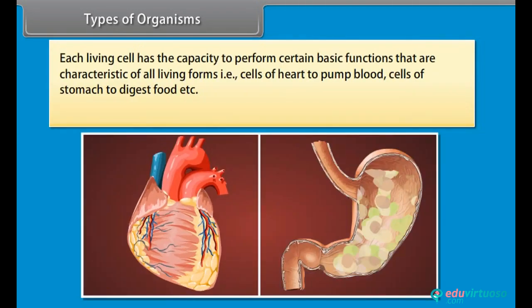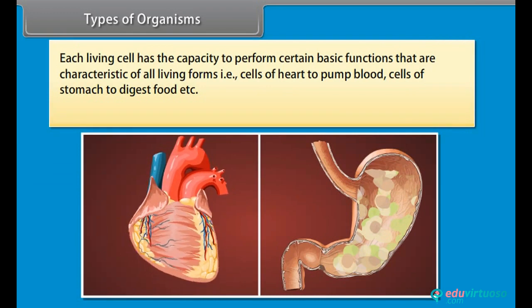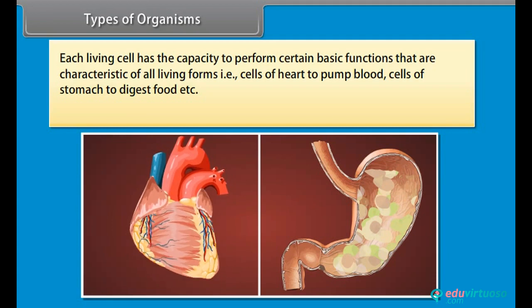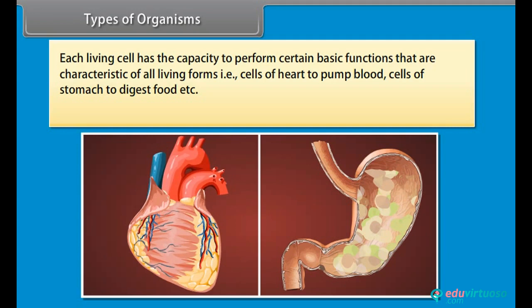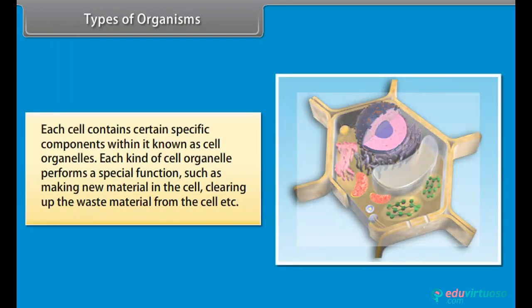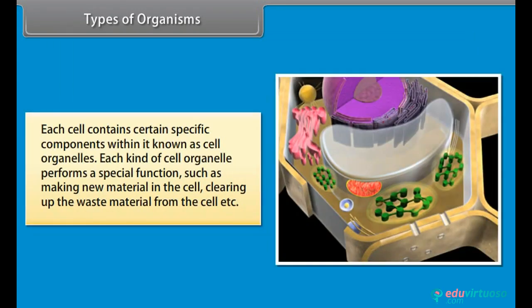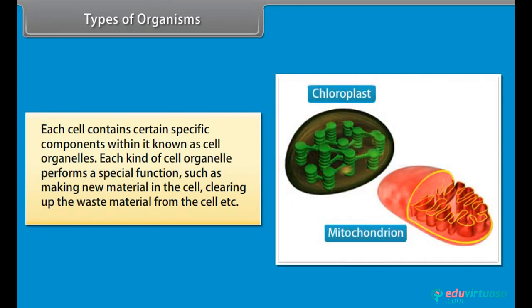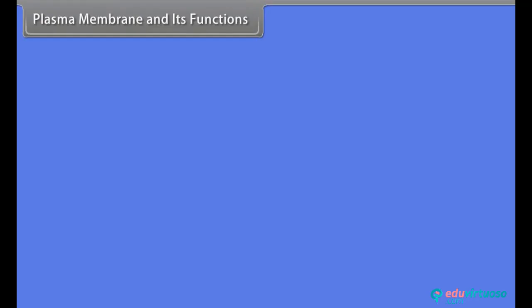Each living cell has the capacity to perform certain basic functions characteristic of all living forms — for example, cells of the heart pump blood, and cells of the stomach digest food. Each cell contains certain specific components within it known as cell organelles, and each kind of cell organelle performs a special function, such as making new material in the cell or clearing up waste material from the cell.